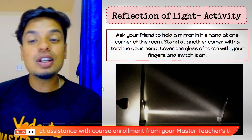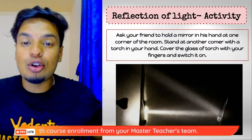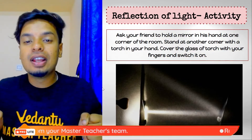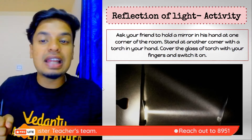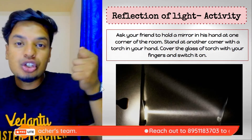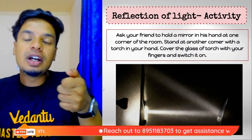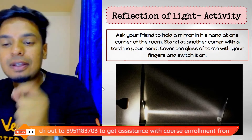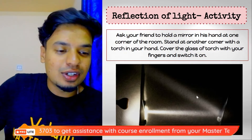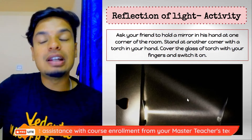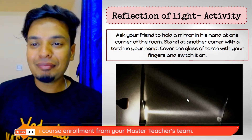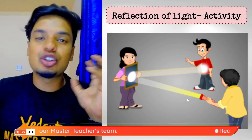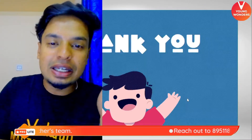To see how light changes direction, try this activity: ask your friend to hold a mirror in one corner of the room, and you stand at another corner with a torch. Cover the glass of the torch with your finger and switch it on — you can see how the light travels and then bounces from the mirror, going in a different direction. By this you can understand how reflection works.